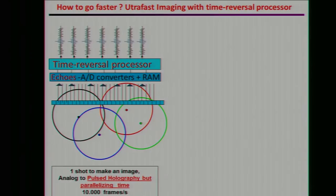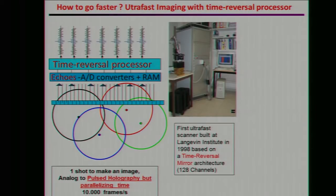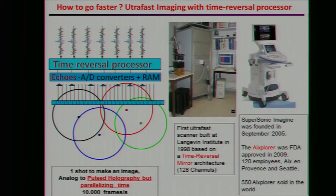You obtain a very high frame rate — typically 10,000 frames per second. We made a first device in our lab based on a time reversal mirror we had built for other purposes, and we began to have ultra-fast imaging systems. Later, a company was created from our lab, and in 2009 they put on the market this ultra-fast ultrasound scanner giving 10,000 frames per second. Many of these Explorer machines have since been sold, mainly in the U.S. and other countries.